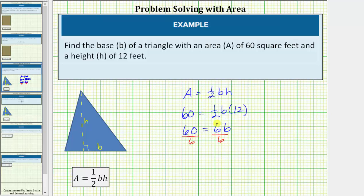Simplifying the right side first, 6 divided by 6 simplifies to 1. 1 times B is B. On the left side, 60 divided by 6 is equal to 10. So because B equals 10, we know the base of the triangle is 10 feet.